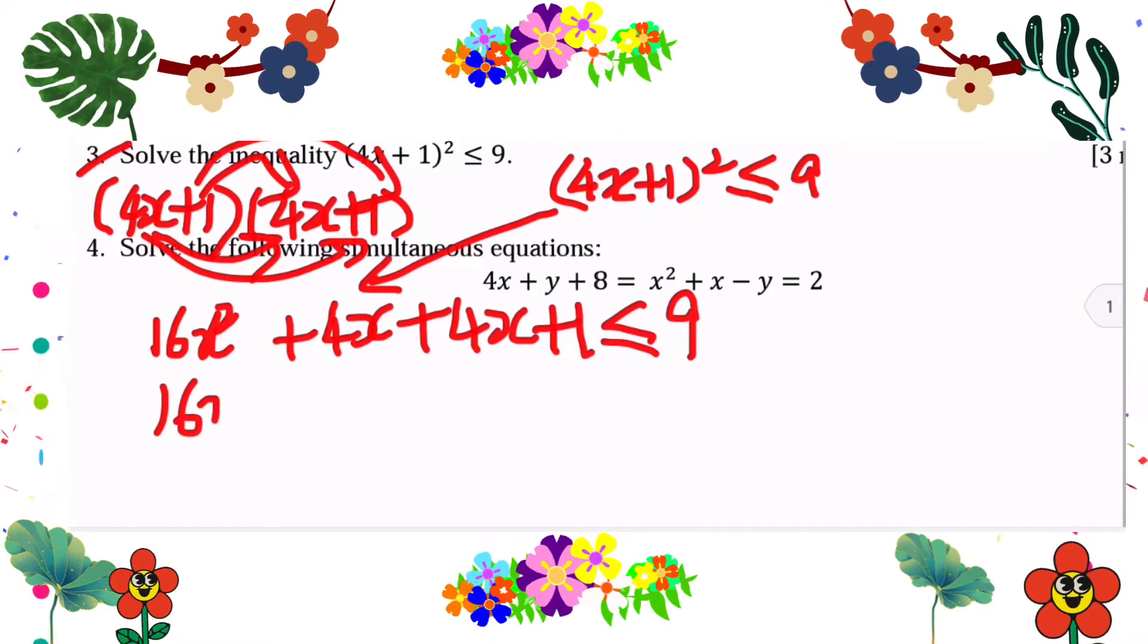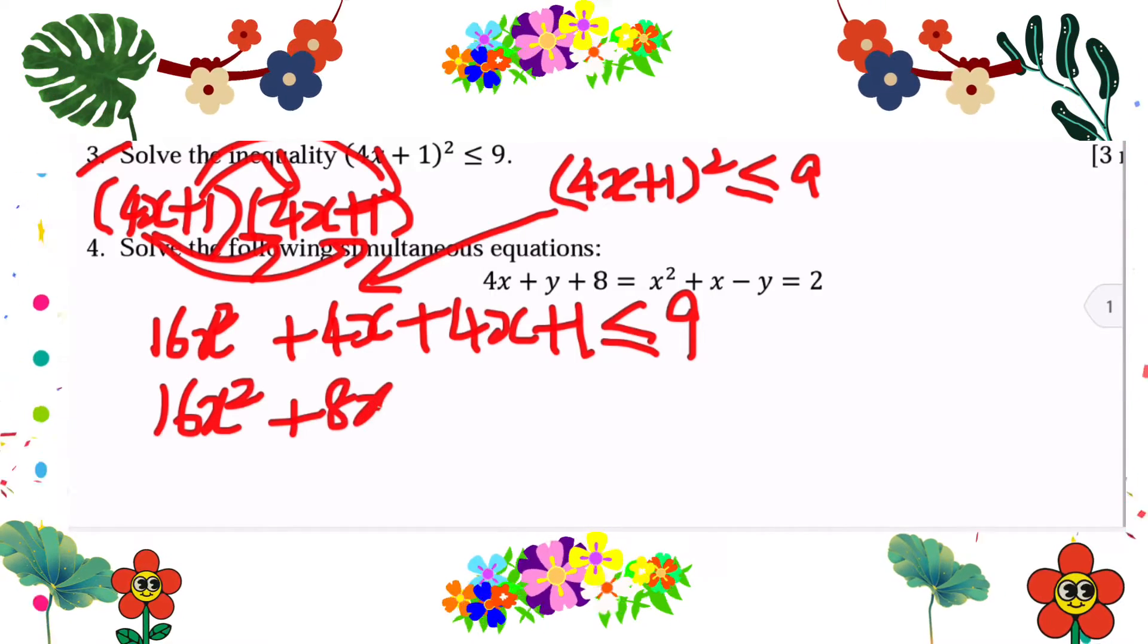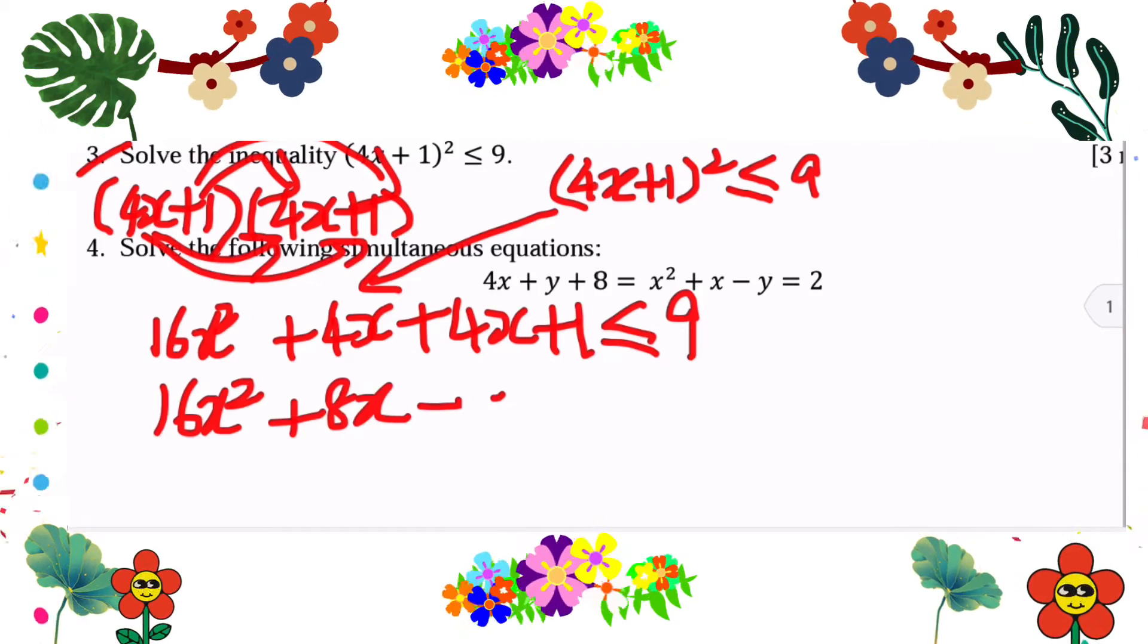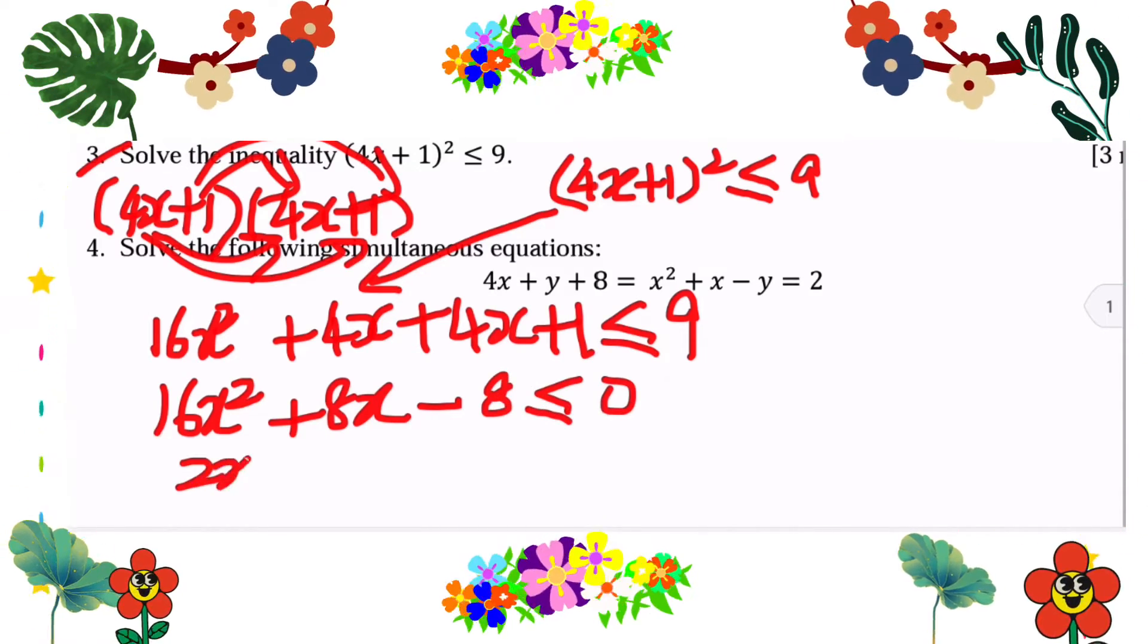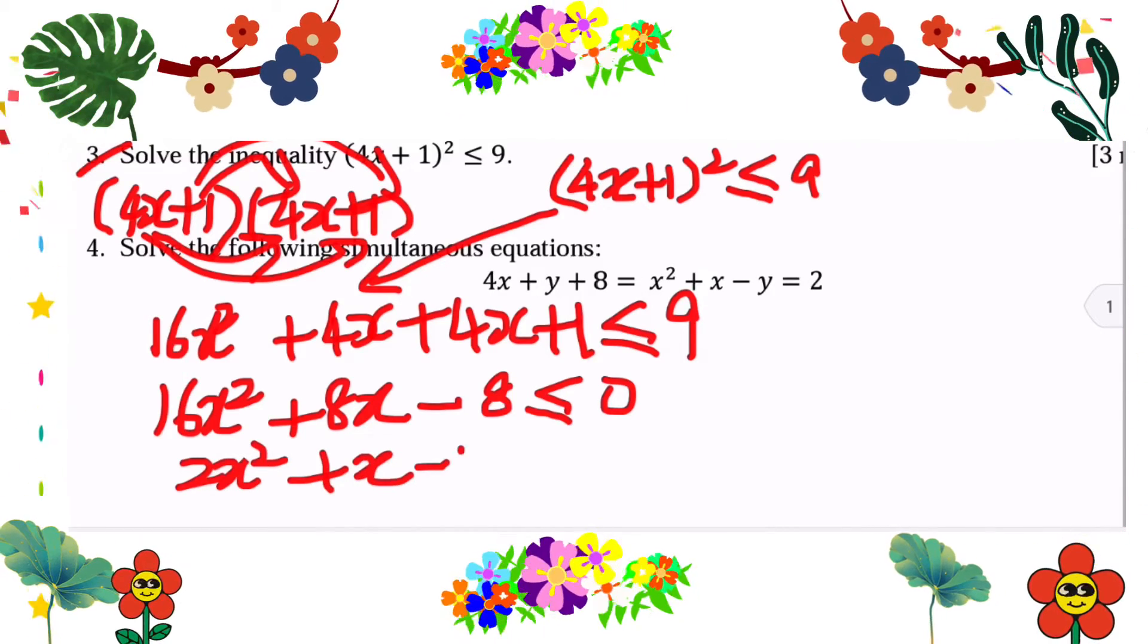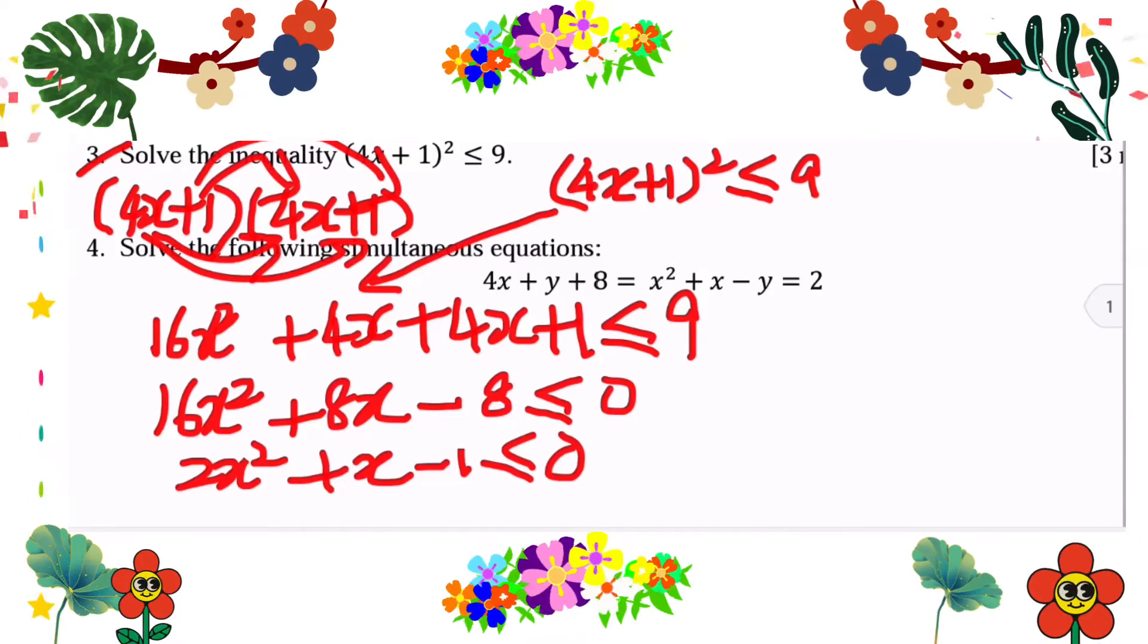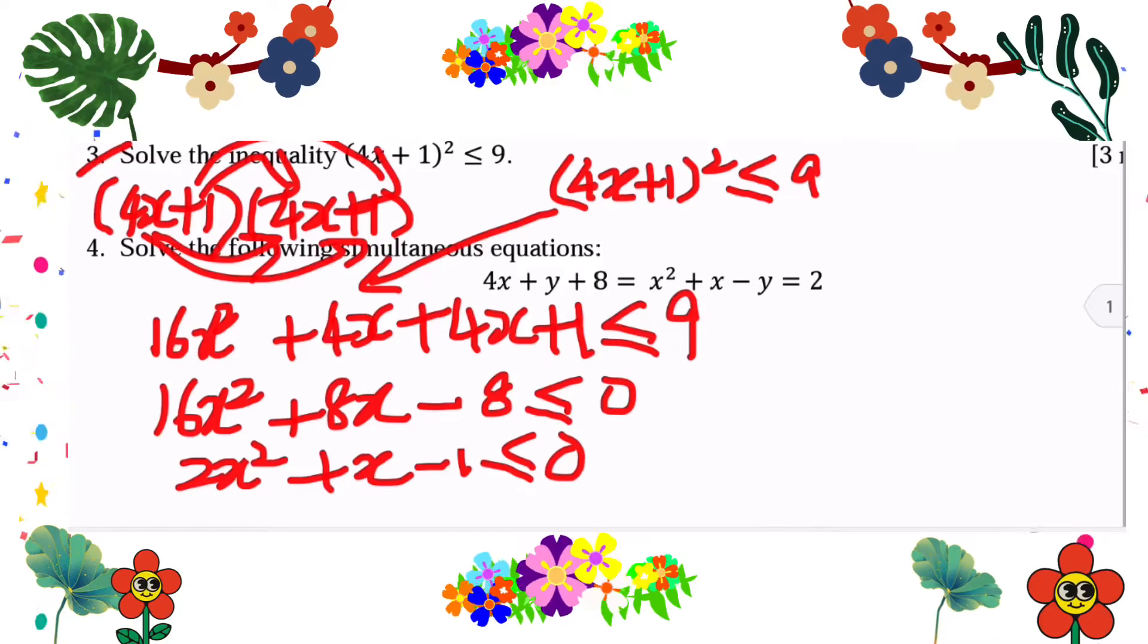Now we need to rearrange the quadratic function so that it becomes general form. Before we factorize, always simplify to the simplest form by dividing by HCF. After it is simplest form, then only we factorize.